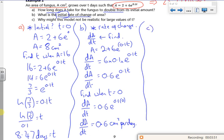Part C. Why might this model not be realistic for large values? It might run out of space, I guess. So it might run out of space.